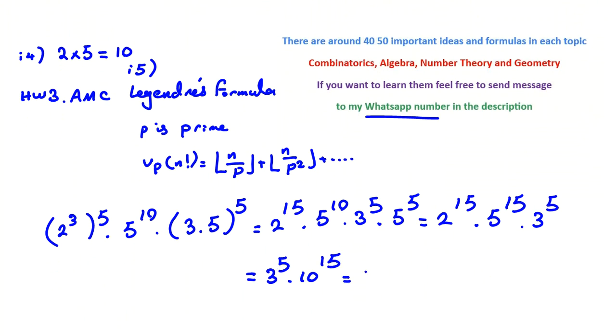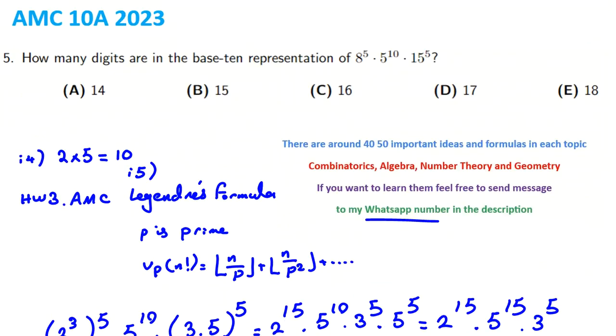3 to the 5, where 3 to the 4 is 81, times 3 is 243. Then how many zeros are there? 15 zeros. So we have 15, 16, 17, 18. How many digits are there? The answer will be choice E.